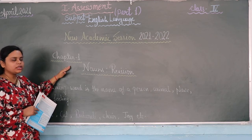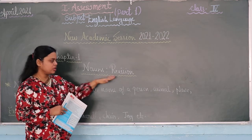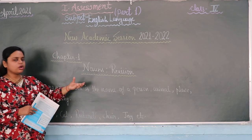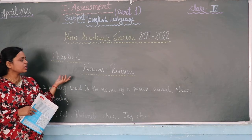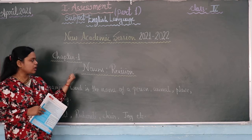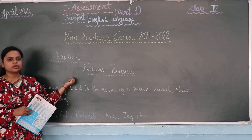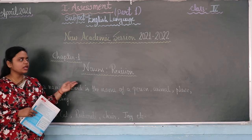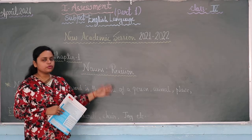We are going to start with chapter 1 and the name of the chapter is Nouns. As you already know, Noun is a very common and very important thing in English language. You have already studied it in previous classes — class 1, class 2, class 3 — and now you are going to learn about the noun in class 4 also.